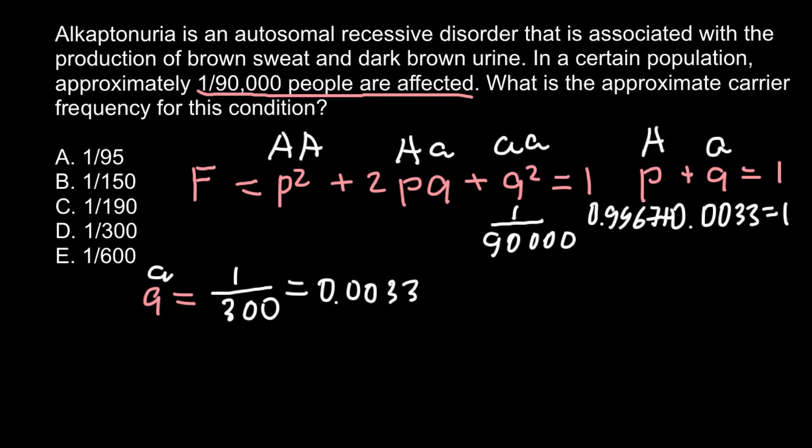So our question is: what is the approximate carrier frequency for this condition in this population? And as you see, for the heterozygous genotype in our formula stands 2pq. So this is the heterozygous genotype.